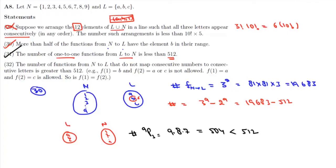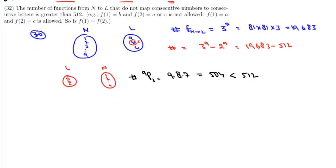Now statement 32 is: number of functions from N to L that do not map consecutive numbers to consecutive letters is greater than 512. So here we have 9 elements 1, 2, 3 up to 9.